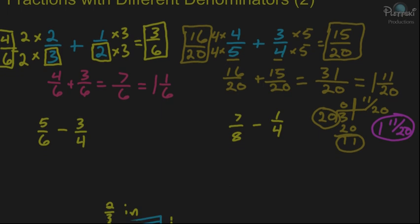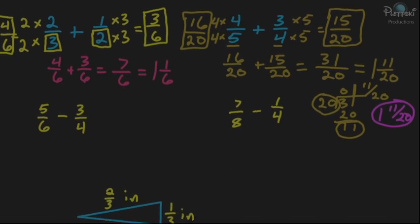Next example — we'll do a couple of subtraction problems. We have 5 over 6 and we're going to take away 3 fourths. Same thing: we're going to have to change the fractions so they have the same denominator. Looking at the 6 and the 4, the least common multiple is 12. To change 5 over 6, we multiply the top and bottom by 2 and get 10 over 12. To change 3 fourths, we multiply the top and bottom by 3 and get 9 over 12.